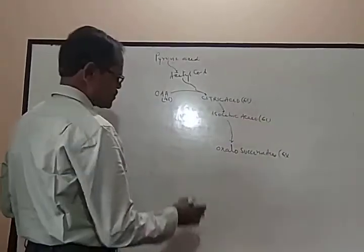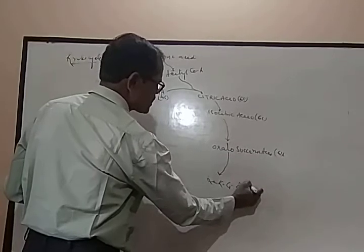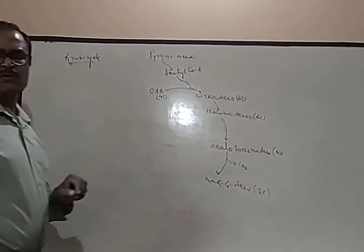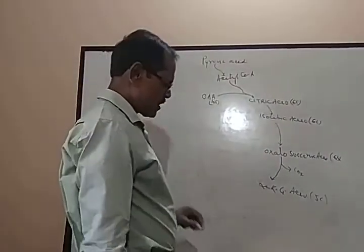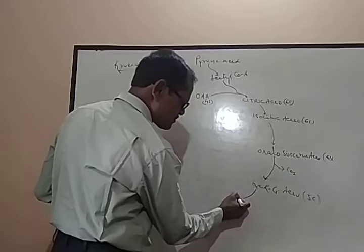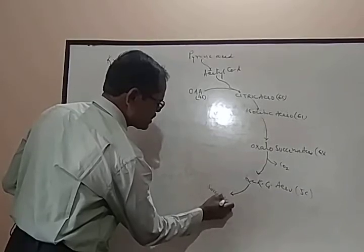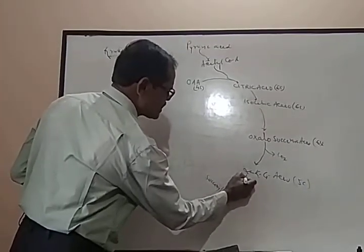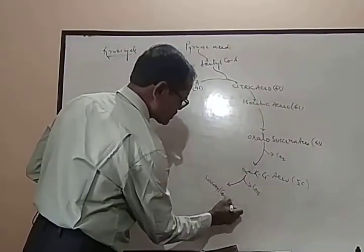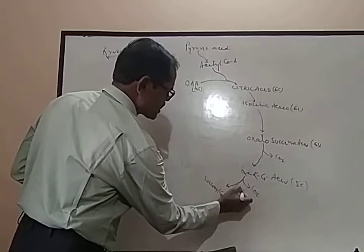Oxalosuccinic acid converts into alpha-ketoglutaric acid by the liberation of CO2, and it becomes a 5-carbon containing compound. This alpha-ketoglutaric acid converts into succinyl coenzyme A by the liberation of 1 mol CO2, and it becomes a 4-carbon containing compound with the addition of coenzyme A.